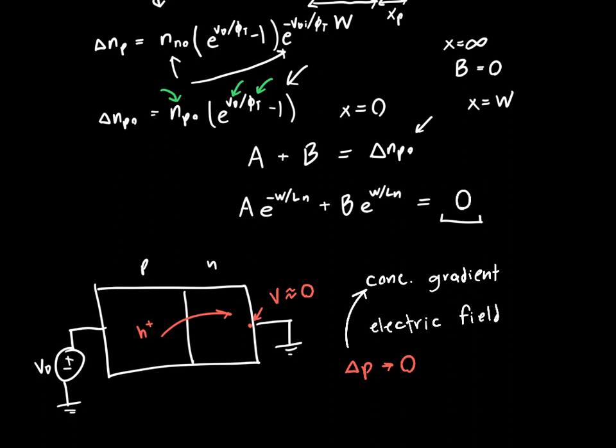So we've got two equations and two unknowns, a and b. And in the next video, we're going to be solving these two equations. I'm just going to show you my favorite way of solving them using linear algebra. And then we're going to get a final expression, a much prettier expression for the current density as a function of x.